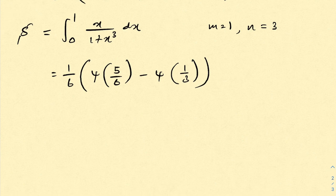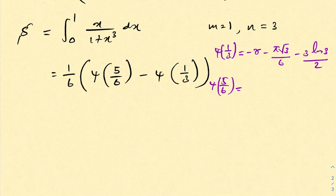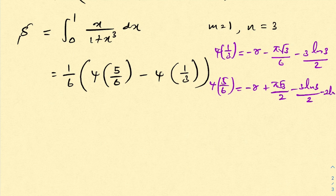Now I am going to record the special values of the digamma function. Digamma of 1 over 3 equals minus gamma minus 5 times square root of 3 over 6 minus 3 times natural log of 3 over 2. Also, digamma of 5 over 6 equals minus gamma plus pi times square root of 3 over 2 minus 3 times natural log of 2 over 2 minus 2 times natural log of 2.